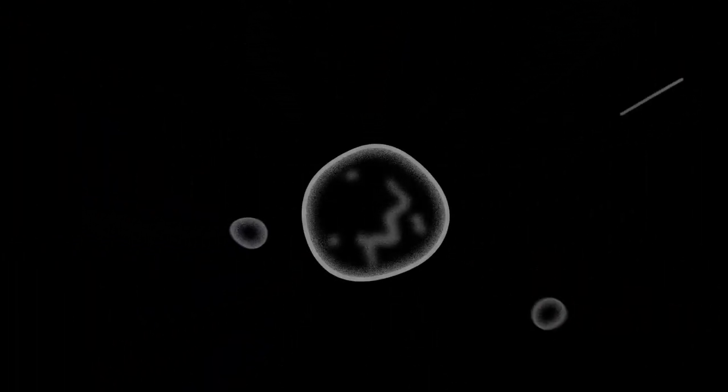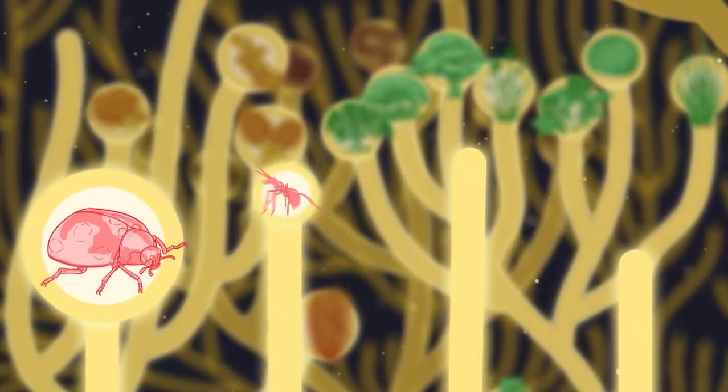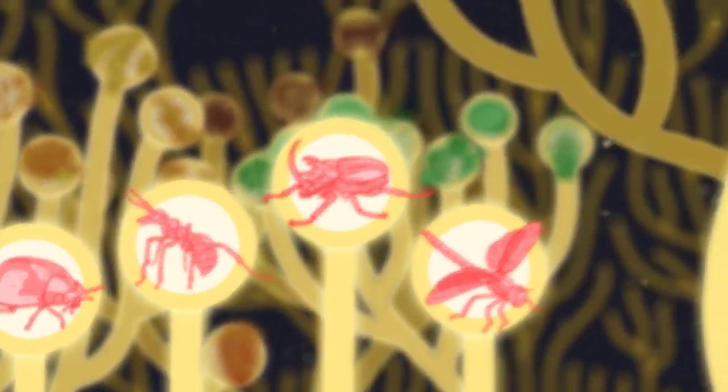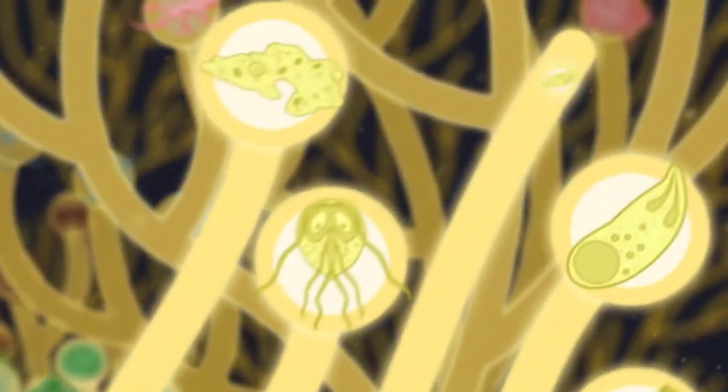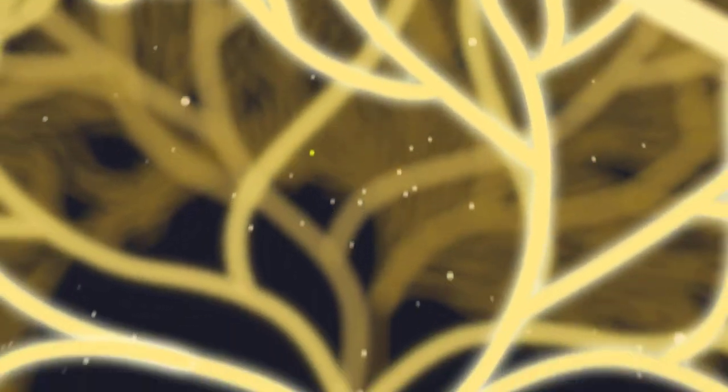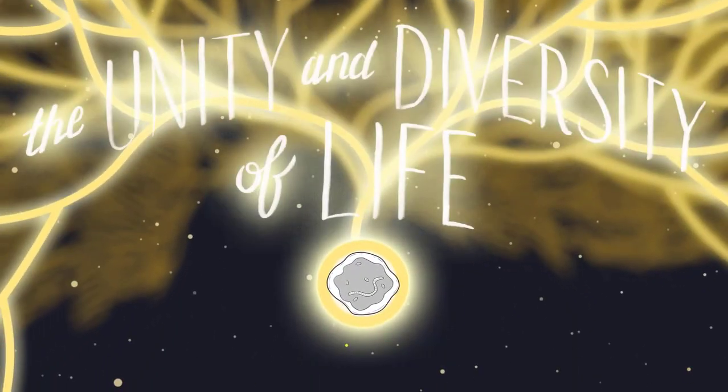Those early life forms were very simple, yet today we share the planet with an estimated 10 to 20 million diverse species of varying complexities, and DNA evidence strongly supports the idea that all living things share a common ancestor.